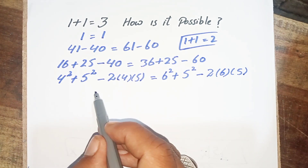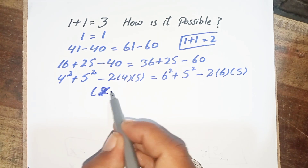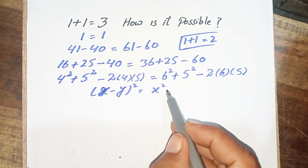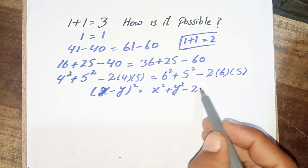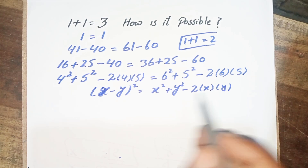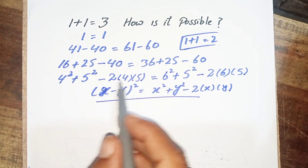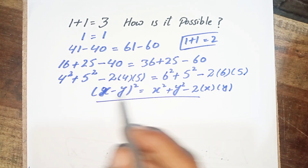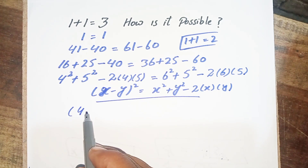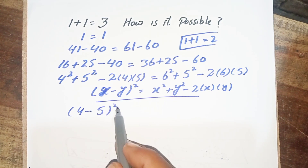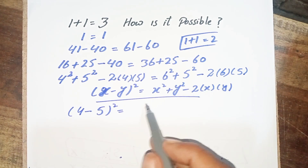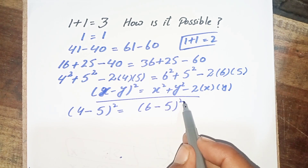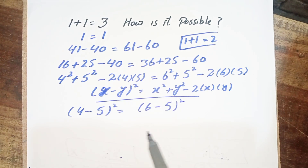Now we have a mathematical formula: (x minus y) squared equals x squared plus y squared minus 2xy. We apply this formula to both sides of the equation. The left side becomes (4 minus 5) whole squared, and the right side of the equation becomes (6 minus 5) whole squared.